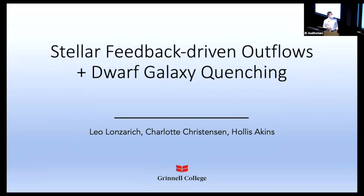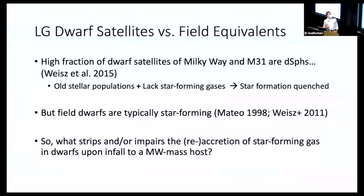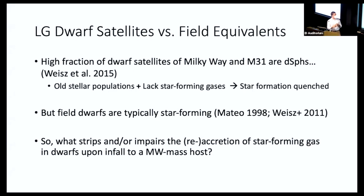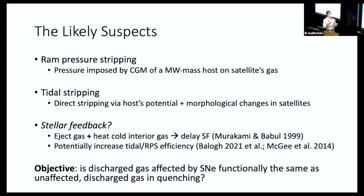We'll address the problem that has come up throughout these talks. When we typically see dwarfs in the field in the mass range of about 10^5 to 10^10 solar masses, these dwarfs are typically star-forming. But when we look at local group satellites like Milky Way and M31, a lot of these are quenched. That begs the question: why is this happening? What's stripping gas or preventing creation of star-forming gas in these satellite contexts? We have a few likely suspects: ram pressure stripping, tidal stripping, and the third — which is what we are looking at — stellar feedback.